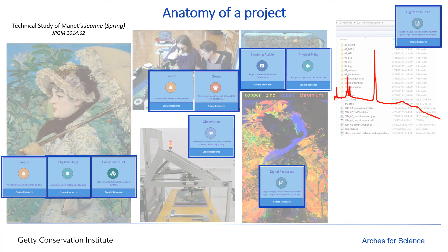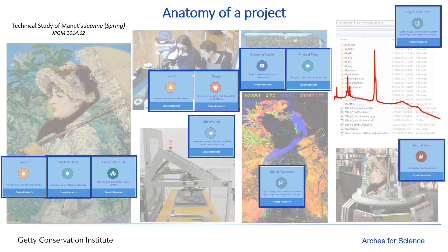These digital resources are analyzed, interpreted, synthesized, and typically turned into some form of dissemination — whether that's an internal report, a blog post, a publication, or a book, as shown here. Any of these could be thought of under the concept of a textual work, which itself may be a digital resource. So these are just some of the types of data that we need to be able to manage for something that we think of as routine in the lab: a technical examination.